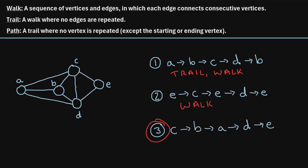For the last sequence: we start at vertex C, then move to B, then to A, then to D, and lastly to E. We can see that no edge was visited more than once and no vertex was visited more than once, so this meets the requirements for a path. And by definition, every path is also a trail, and every trail is also a walk. So this sequence is all three: a path, a trail, and a walk. Those were a few different examples of how to determine if a sequence is a walk, a trail, or a path as it relates to graphs.